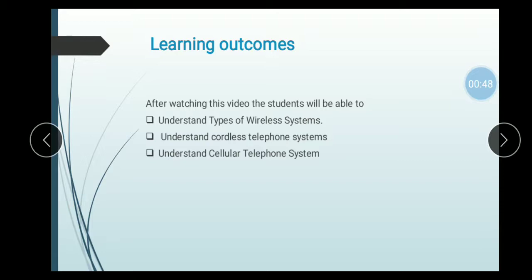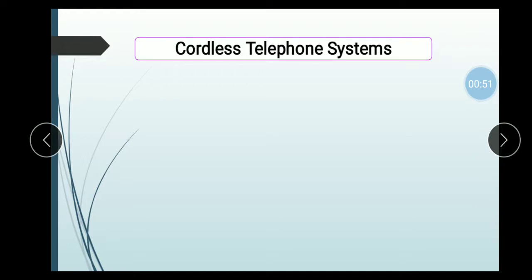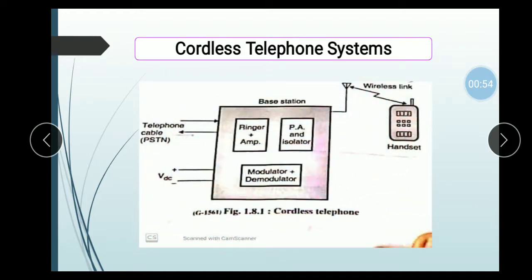We start our topic: the Cordless Telephone System. The Cordless Telephone System is a Full Duplex System, meaning this system can both transmit and receive information. The Base Station consists of a Ringer, Amplifier, PA, Isolator, Modulator and Demodulator, one Battery Charger, Wire, Telephone Cable, and Handset. The Cordless Telephone System consists of a Base Station as well as a Handset, which are connected through EM frequency.